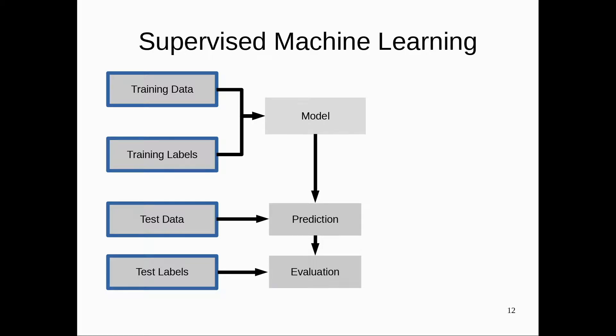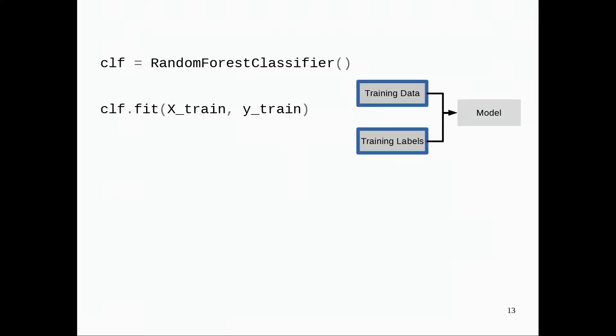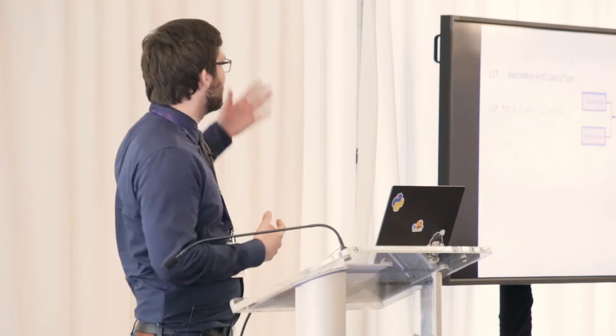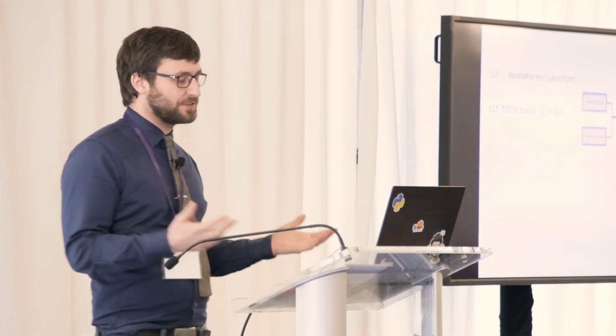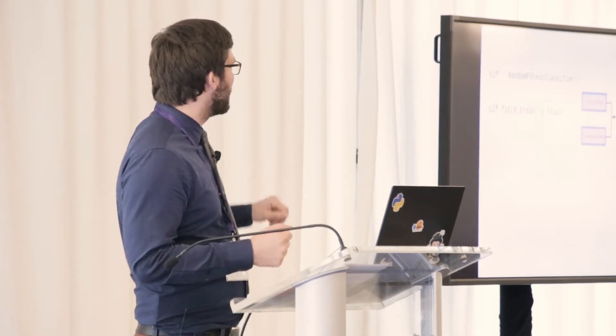This is the standard workflow in supervised machine learning — basically two phases: you train a model on training data, and then you want to generalize to new data. This is mirrored very directly in the scikit-learn API. All the algorithms in scikit-learn are implemented as Python classes. So if I want a random forest classifier, there's a Python class called RandomForestClassifier. These objects encapsulate both the algorithms for building the models and for making predictions, and they store all the model parameters. For example, in the RandomForestClassifier, if I call fit, it will build the model and store all the trees and all the splits in the clf object.